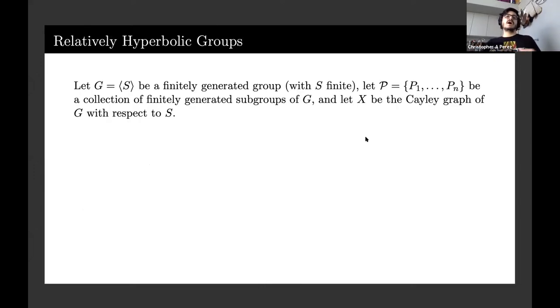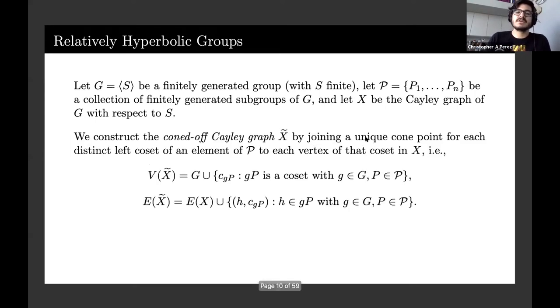Let X be the Cayley graph of a finitely generated group and let P be a collection of finitely generated subgroups. We construct the coned off Cayley graph X tilde by joining a unique cone point for each distinct left coset of an element of P and each vertex of that coset in X.